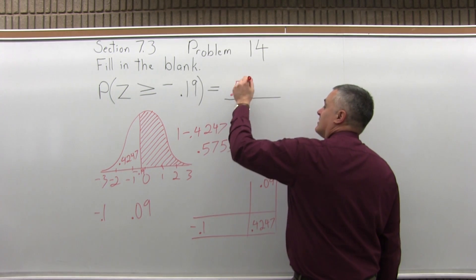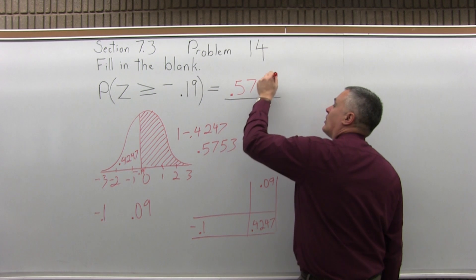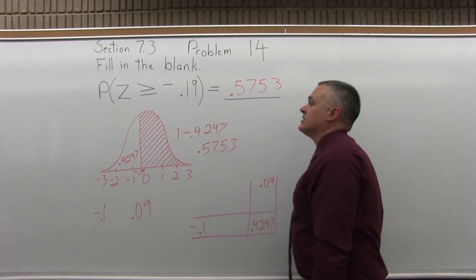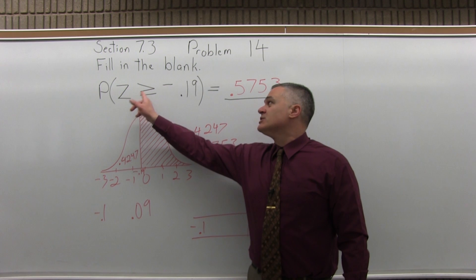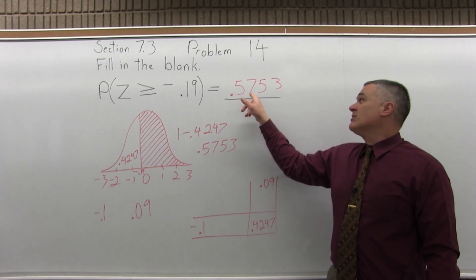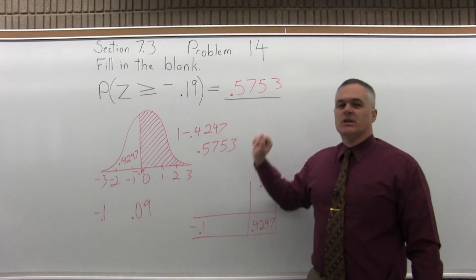And that's the final answer, .5753. For all greater than questions, the answer is 1 minus the chart value. So the probability that z is greater than or equal to negative .19 is about a 57.5% probability.